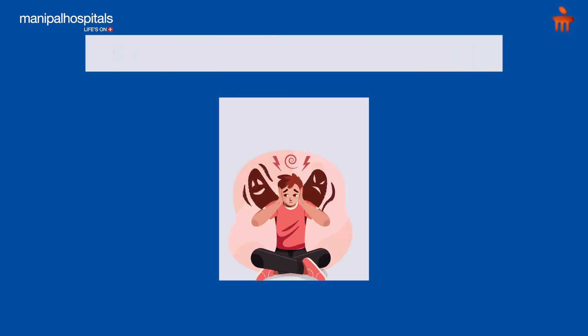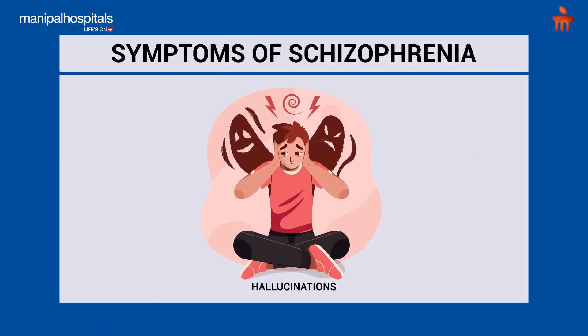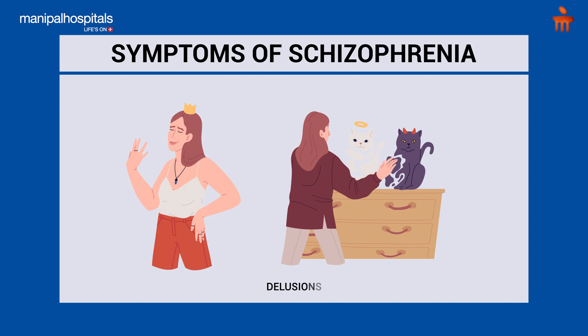First is hallucinations — that is, a person feels, hears, or can see things which are not real. Second is delusions, that is a false, firm, fixed belief that cannot be shaken even if we contradict it.